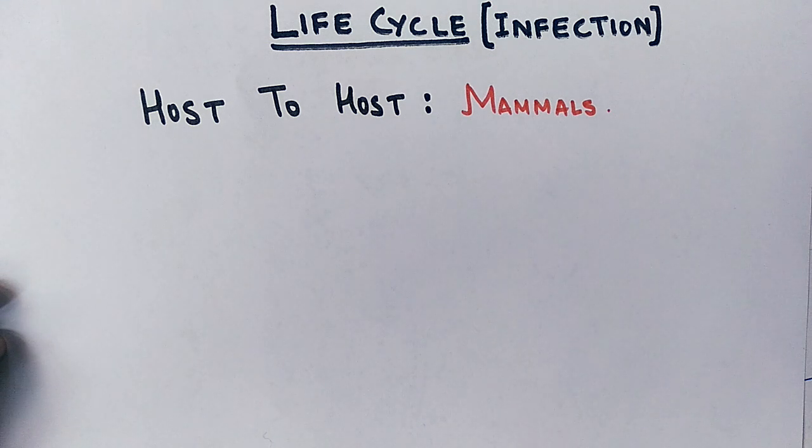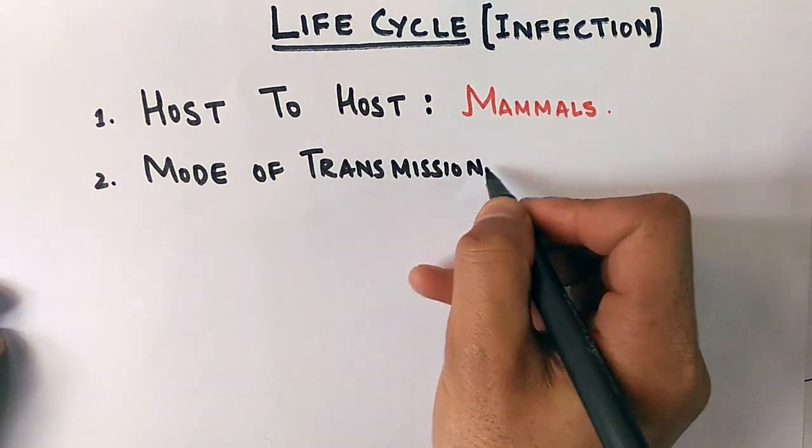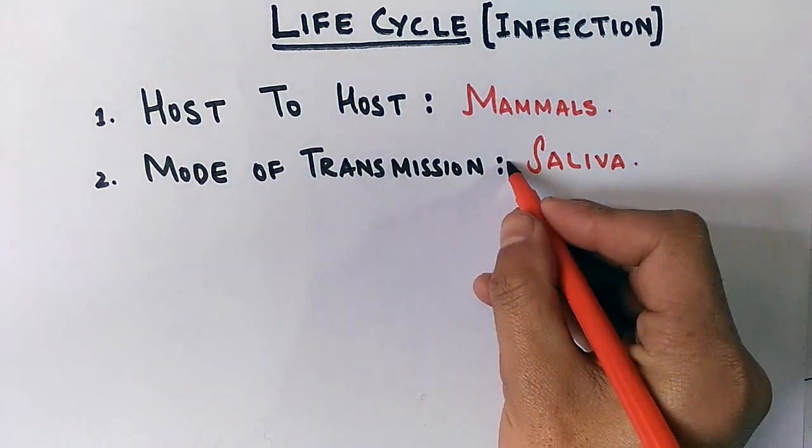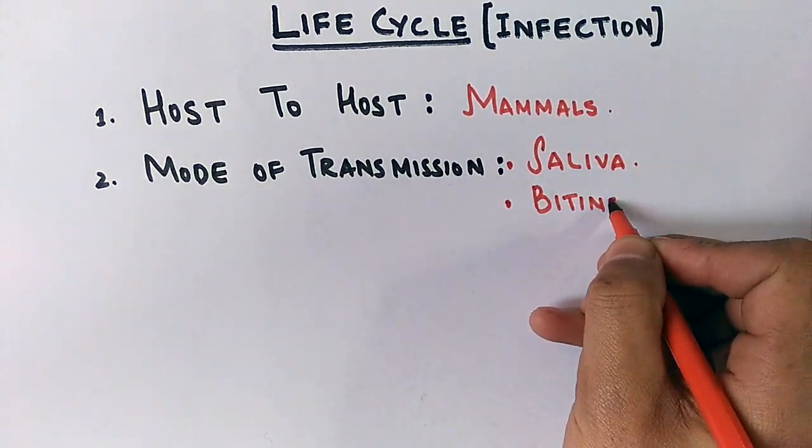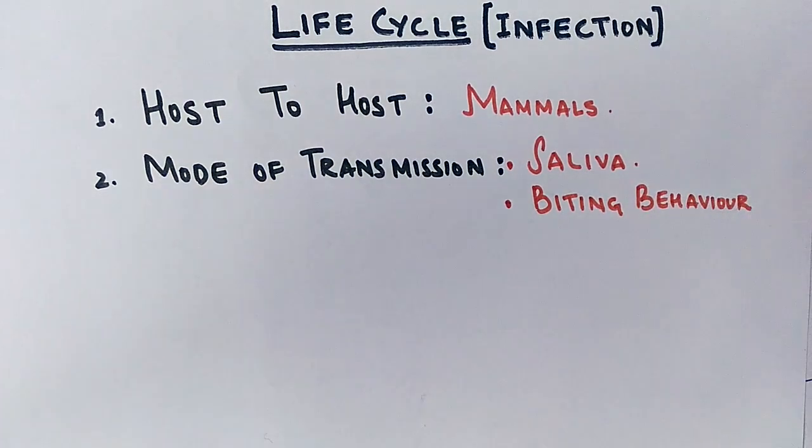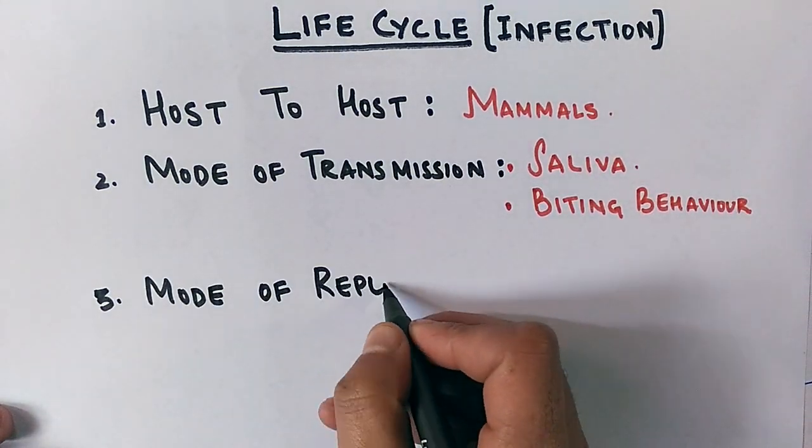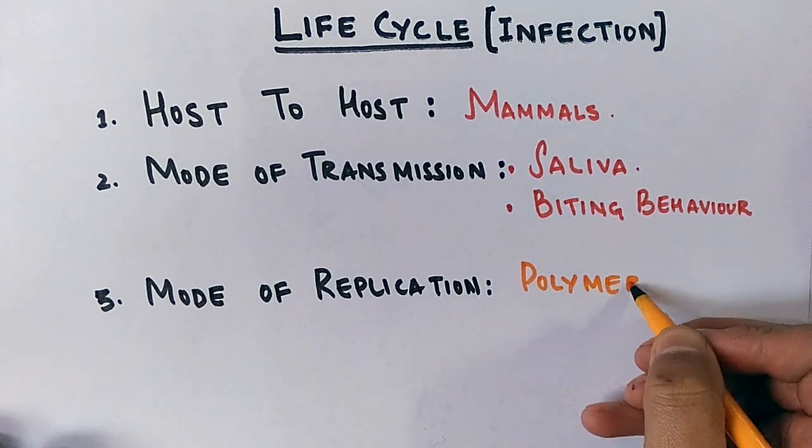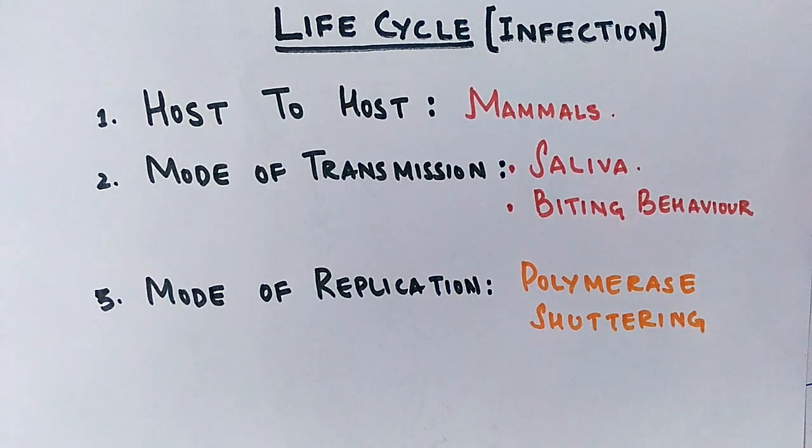The second point is its mode of transmission—it's through saliva and biting behavior, which we're going to discuss later in the video. The third point is its mode of replication, which is polymerase stuttering, also to be discussed later.